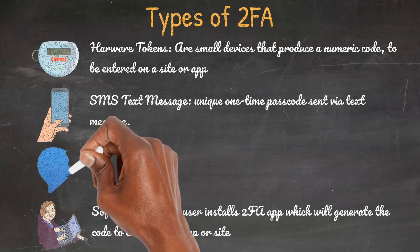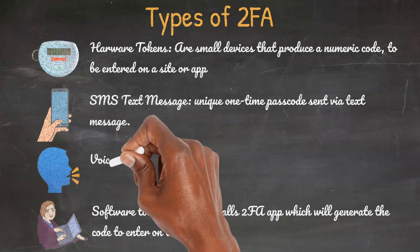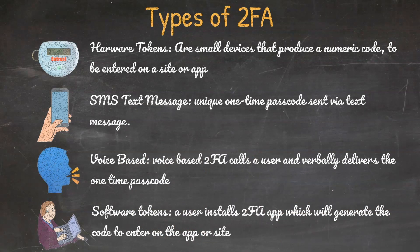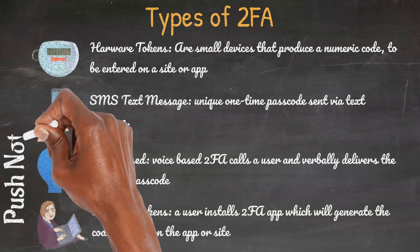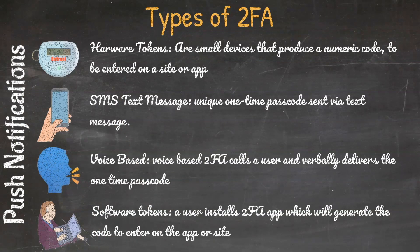Voice-based 2FA: when a user tries to access an account, a voice-based 2FA calls the user and verbally delivers the one-time passcode. Push notification: whenever there is an authentication attempt, the app or website sends the user a push notification indicating that an attempt has been made. The user then decides whether or not to approve or deny access.